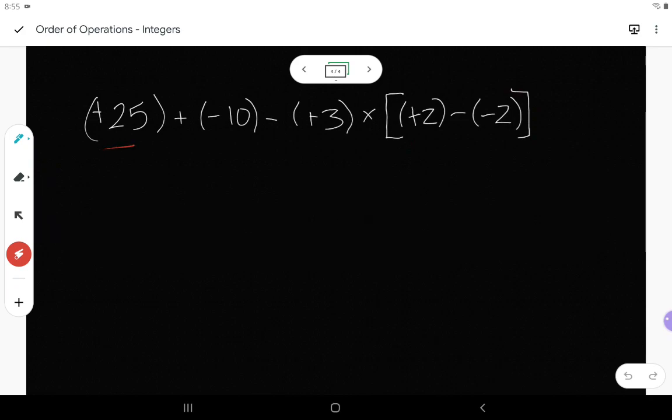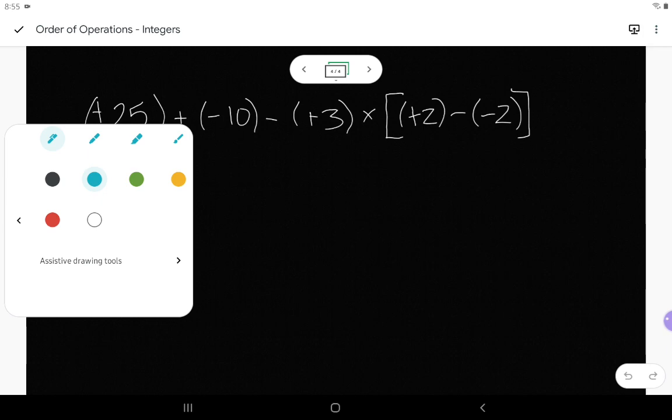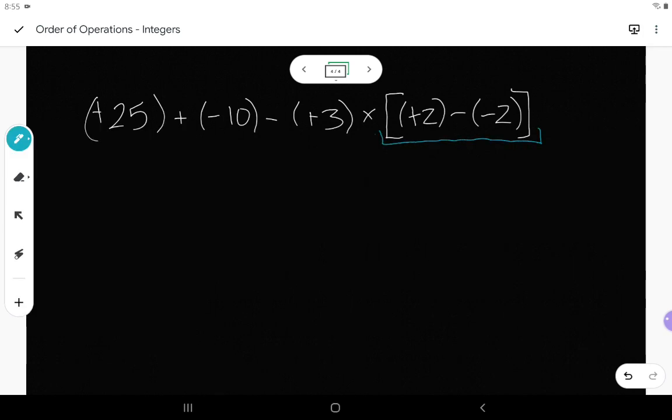I've got positive 25 plus negative 10 minus positive 3 multiplied by this set of brackets, which has positive 2 minus negative 2 inside of it. So I do need to work inside the brackets first. Inside the brackets, I have a subtraction statement. I don't really want to work with that subtraction statement. What I would rather do is work with positive 2, and instead of subtracting, add. And the opposite of negative 2 is positive 2. So that's what I'm going to work with first. Instead of subtracting, I'm going to add the opposite.